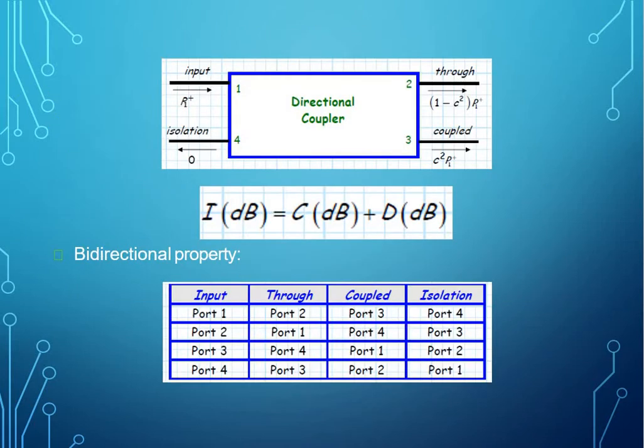Here you could see the depiction of directional coupler where isolation equals coupling plus directivity. And the bidirectional property states that whenever we give input at port 1, the through port, the coupled and isolation port react accordingly and determine the output.